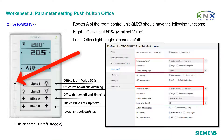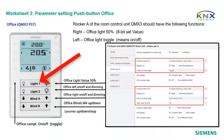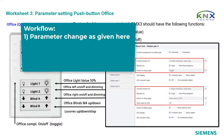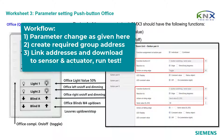That leads to the following configuration of rocker A: left button equals toggle on/off, right button equals value control sending 50%. Do the three steps: 1. Parameter change as given. 2. Create the required group address. 3. Link addresses and download to sensor and actuator. Then test the new function.